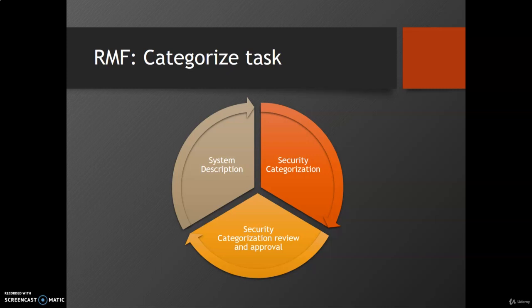Information may be added to and updated in the system description as it becomes available during the system life cycle, during the execution of RMF steps, and as any system categorization changes. Examples of system description information that an organization can include in the security and privacy plan are: name of the system, system identifiers, system version or release number, manufacturer and supplier information, individual responsibility for the system, system contact information, and the organization that manages, owns, or controls the system.